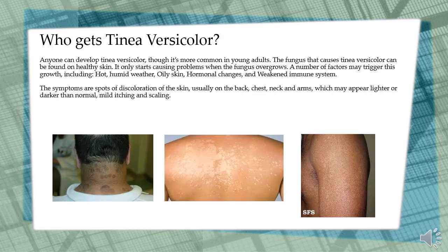Who gets tinea versicolor? Anyone can develop tinea versicolor, though it is more common in younger adults. The fungus that causes tinea versicolor can be found on healthy skin. It only starts causing problems when the fungus overgrows. A number of factors may trigger this growth, including hot, humid weather, oily skin, hormonal changes, and a weakened immune system.